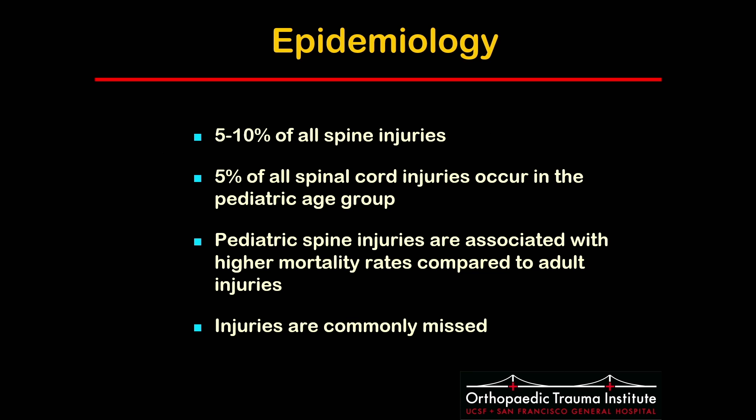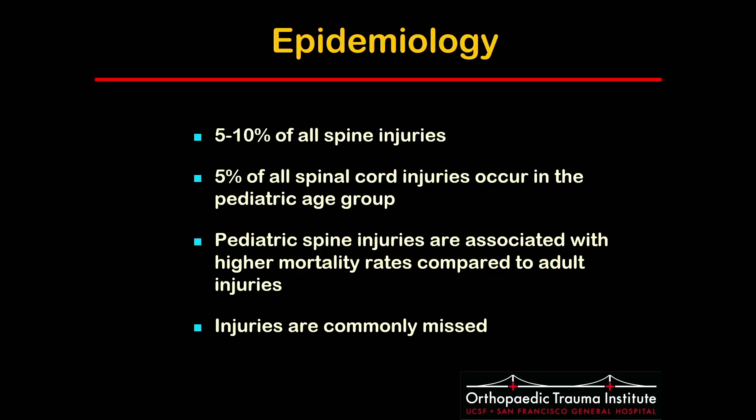Depending on the spine series, pediatric spine injuries account for 5% to 10% of all spine injuries and 5% of all spinal cord injuries. Interestingly, pediatric injuries are associated with higher mortality rates compared to adult injuries, thought to be due to the higher energy required to cause them. As kids are frequently poor historians, pediatric spine injuries are frequently missed — reports estimate that up to 50% of injuries are missed on initial evaluation.